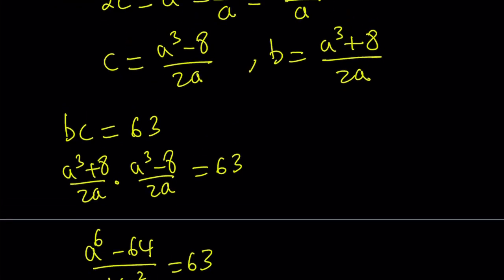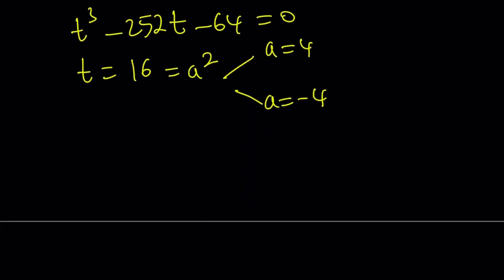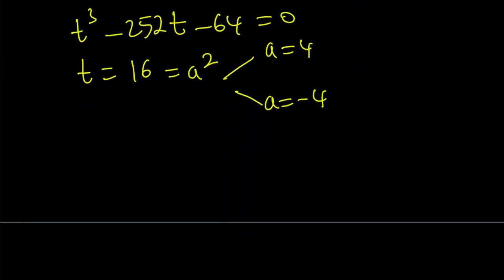c can be written as a cubed minus 8 over 2a. So from here, I can find the values of b and c. If a is equal to 4, b becomes 9 and c becomes 7. If a is equal to negative 4, b becomes negative 7 and c becomes negative 9. Guess what? These two give us the same result.